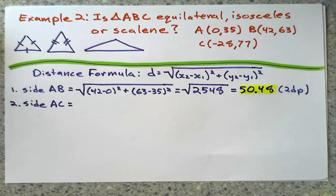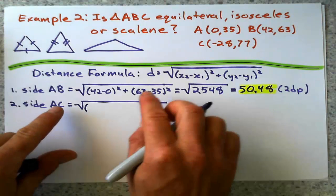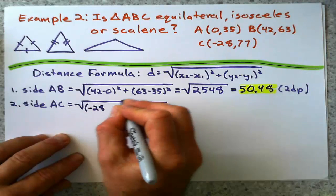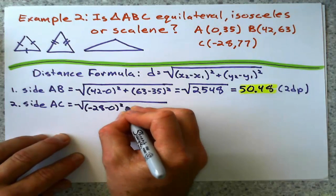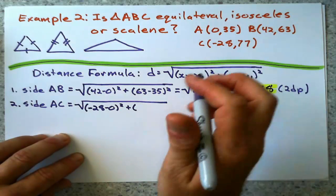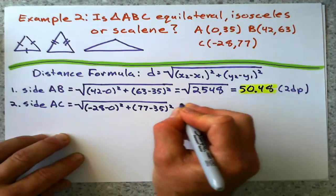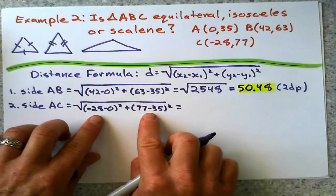Plug it into our distance formula. Change in x for AC is negative 28 minus 0 squared plus change in y. 77 minus 35 squared.